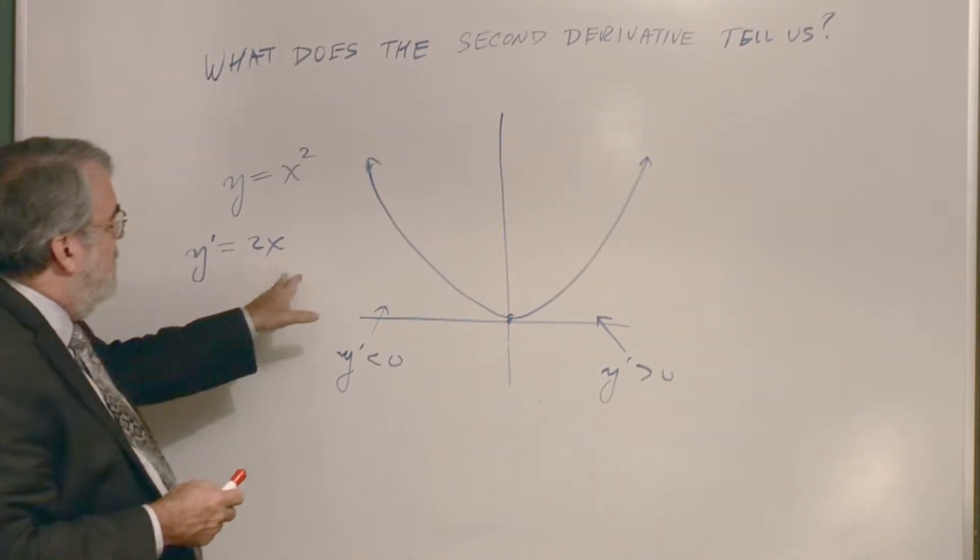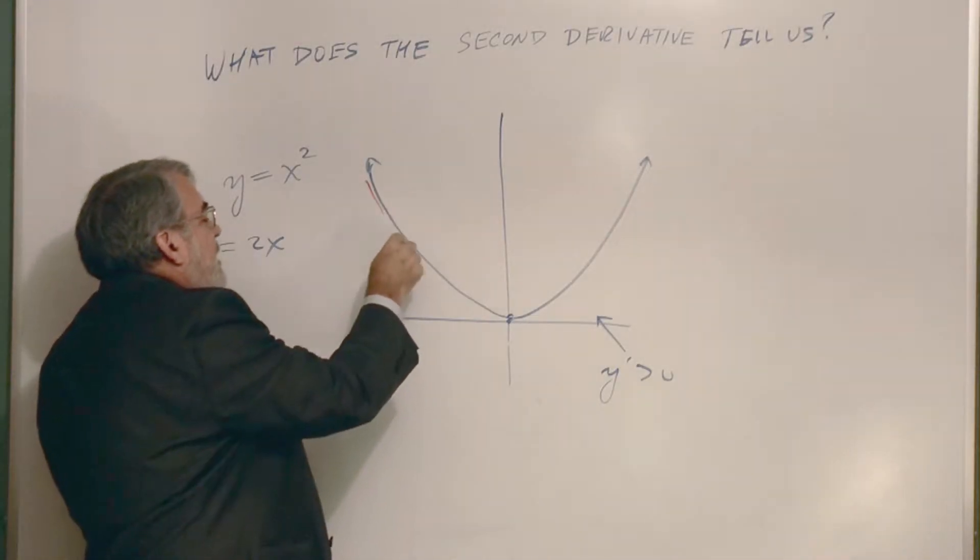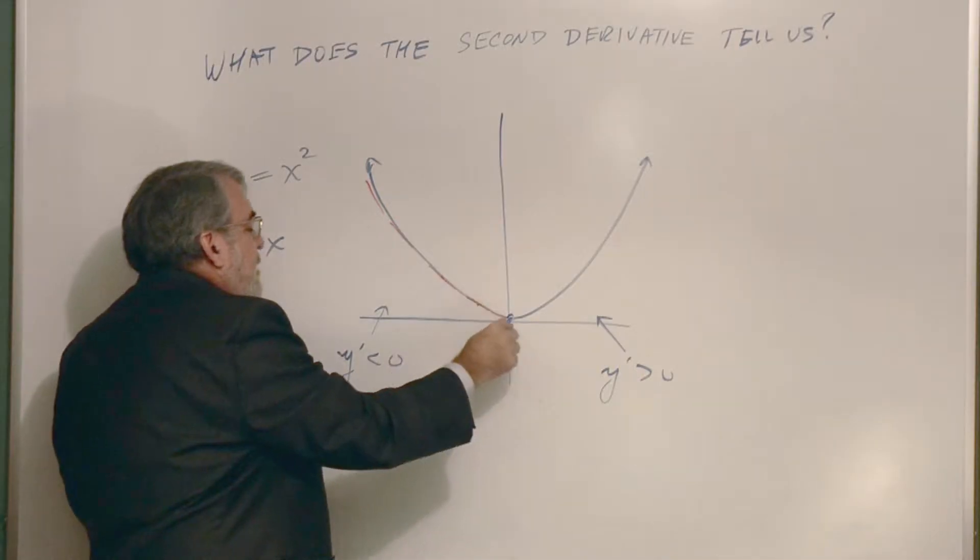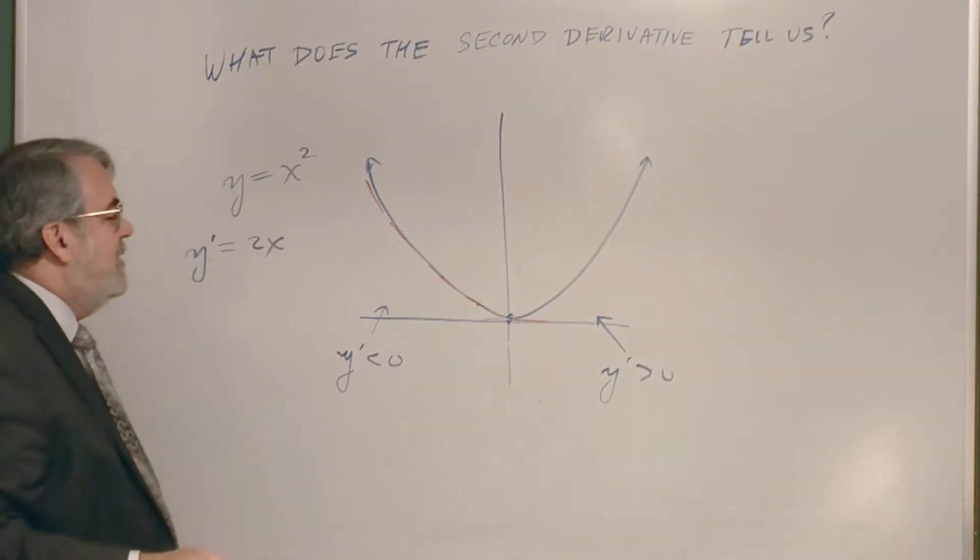And now, as you move with the derivative, this tangent line is kind of steep. Here it's not so steep. Here it's getting shallower, shallower. Right down here, it's flat. The derivative is 0.